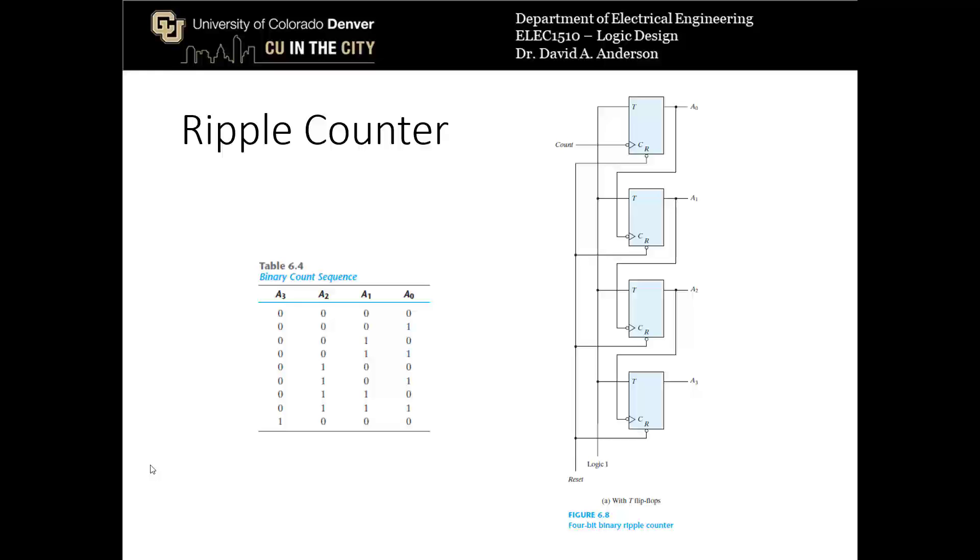This is made up of 4 T flip-flops, as you can see. I'll number them, flip-flop 0, 1, 2, and 3. And so the way that this works is that in sort of an odd design, the outputs from the flip-flops are connected to the clock inputs of the next flip-flops, sort of in order.